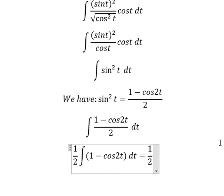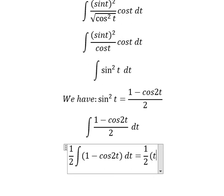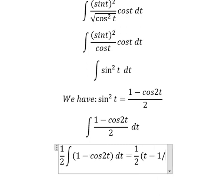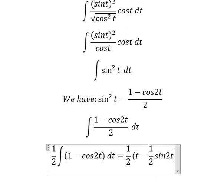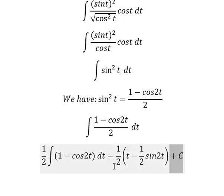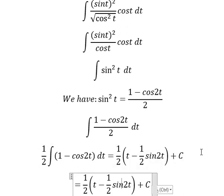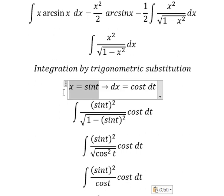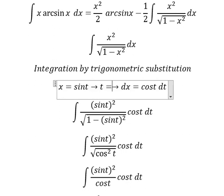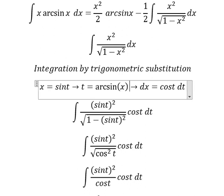The integration of the first part — which is T — gives T. The integration of sin(2T) gives one over two times sin(2T), plus constant C. Now T equals arcsin(s), so we can substitute back.